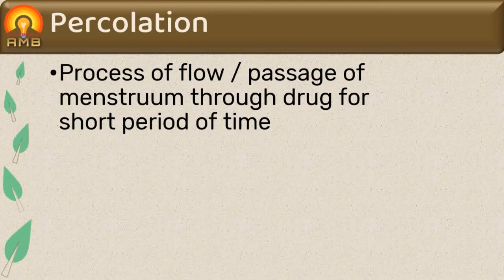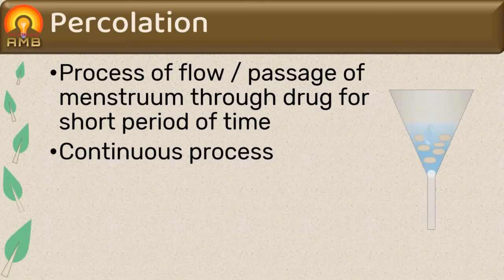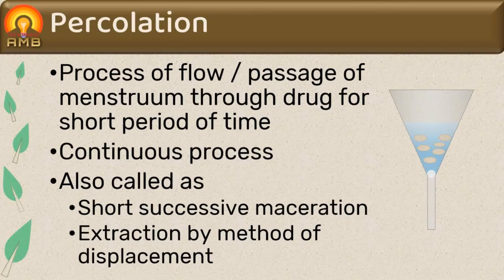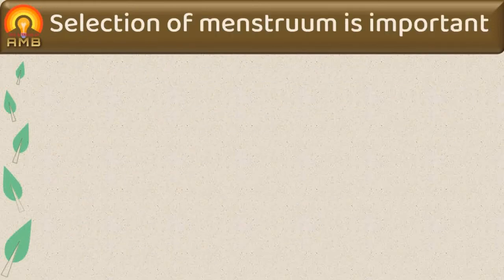Processes of extraction which involve a passage or flowing of menstruum through drug for a short period of time is called percolation. Maceration is a stationary process while percolation is a continuous process. The concentrated portion of menstruum is continuously displaced and replaced by fresh menstruum, which is responsible for complete extraction of the drug. Hence percolation can be termed as short successive maceration or extraction by the method of displacement.